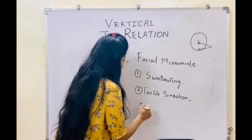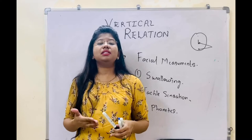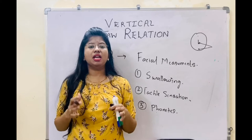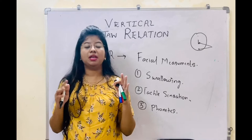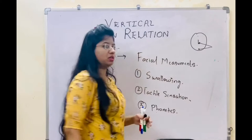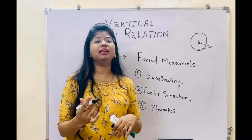The third method is phonetics, or speech. We ask the patient to say words ending at 'M' — like 'Ram' or 'Raheem' or any word. As soon as the word ends at M, both the lips are contacting each other. At that point, you need to measure the distance from the tip of the chin as well as the tip of the nose. As soon as it stops at M, you measure it — that will be the rest position because at that position the jaw will be at rest.